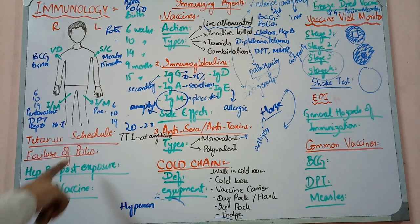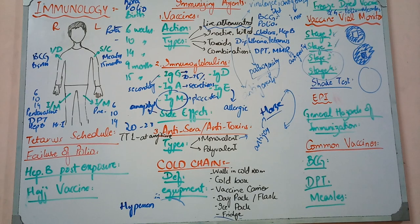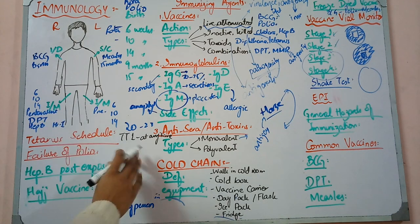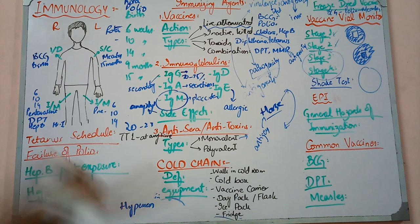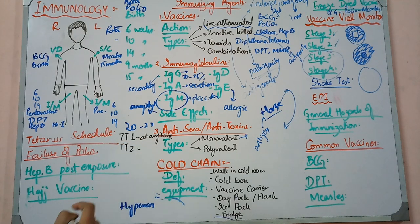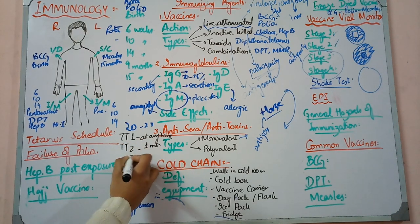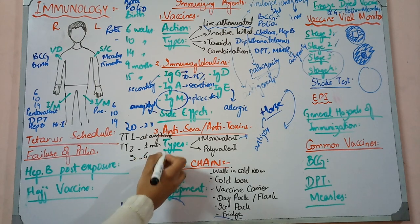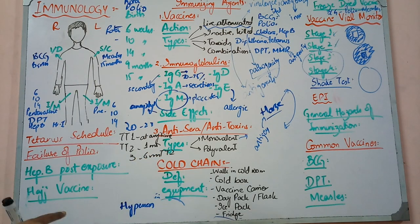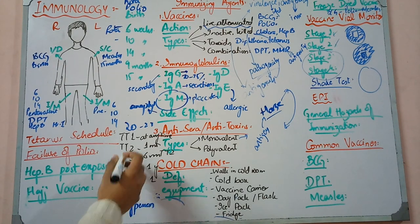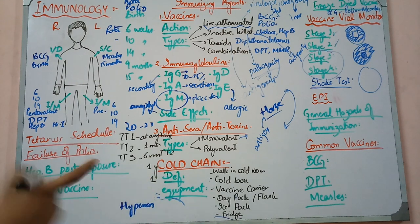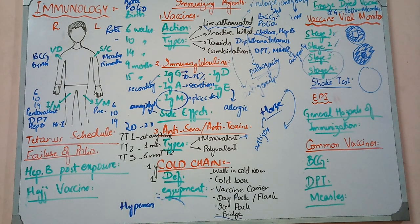Many questions come from the Tetanus schedule. What is the Tetanus schedule for a pregnant female or reproductive age female? TT1 - Tetanus toxoid 1 - can be given anytime to every reproductive age female. TT2 - one month after TT1. TT3 - six months after TT2. TT4 - one year after TT3. TT5 - one year after TT4. This whole table is in every book, in Excel and K-Park.